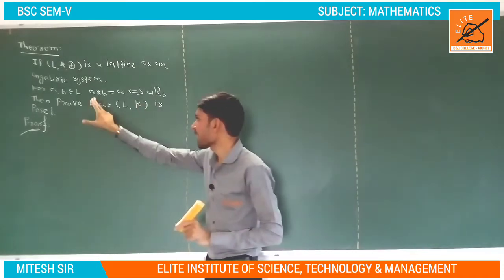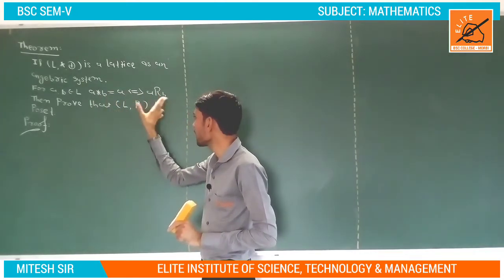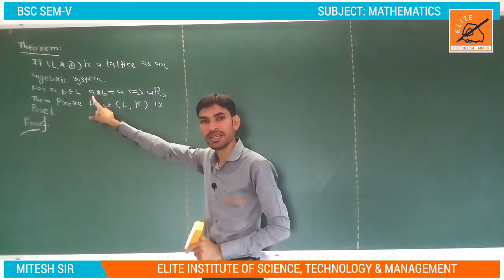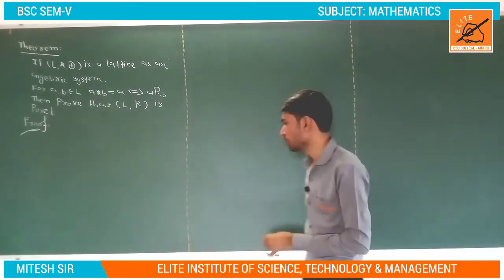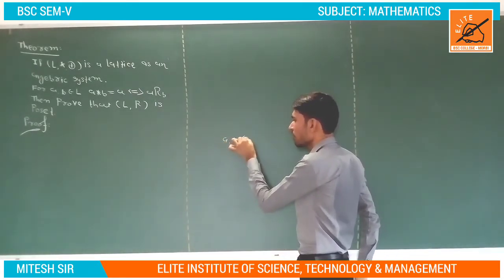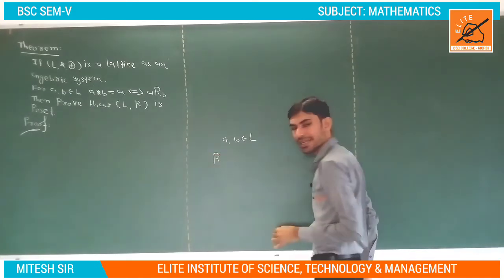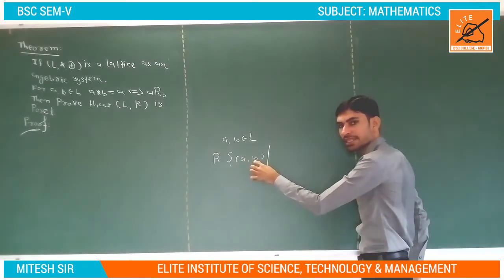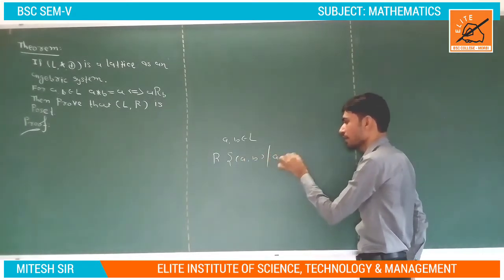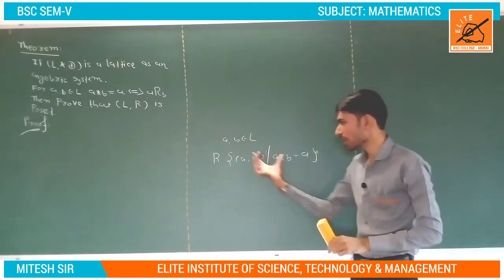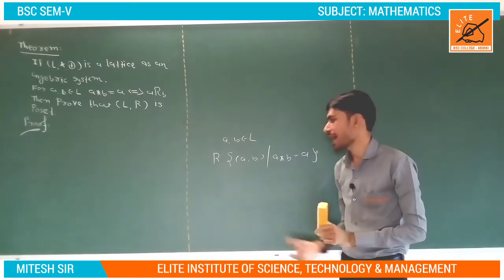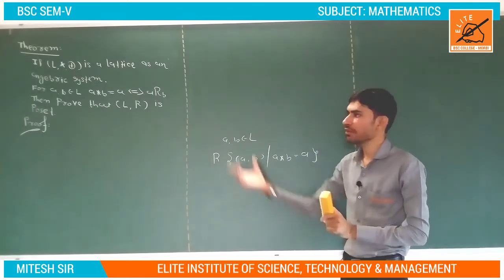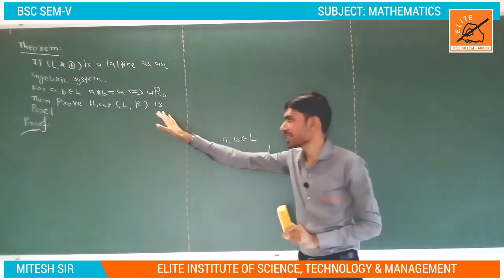We define the relation R: a is related to b if and only if a★b = a. In short, for a, b belonging to L, relation R contains the pair (a, b) where a★b = a. So this is our definition of the relation. Now we will show our set L with relation R is a poset.